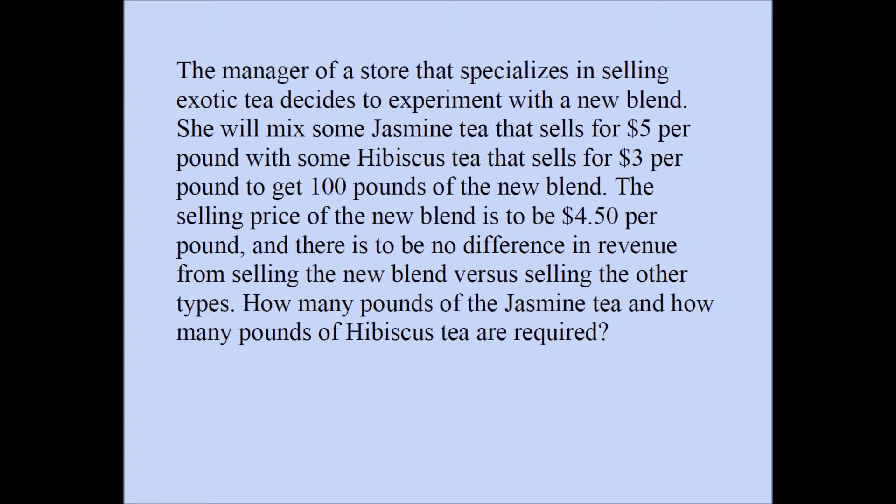The manager of a store that specializes in selling exotic tea decides to experiment with a new blend. She will mix some jasmine tea that sells for $5 per pound with some hibiscus tea that sells for $3 per pound to get 100 pounds of the new blend. The selling price of the new blend is to be $4.50 per pound and there is to be no difference in revenue from selling the new blend versus selling the other types. How many pounds of jasmine tea and how many pounds of hibiscus tea are required?